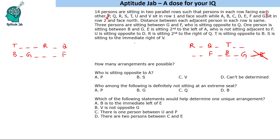E is sitting second to the left of A, and A is not sitting adjacent to F. So A cannot sit next to F — if we put A there, E has no valid placement. The only possibility is placing A and E in valid positions. Similarly in the other case, A and E are placed accordingly. We also have U sitting opposite to D, leaving only one possibility in each case. D and U are now placed and all positions in these rows are filled.